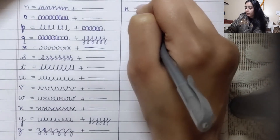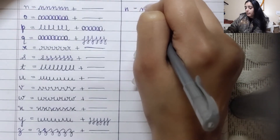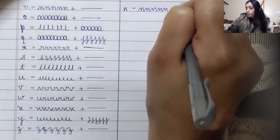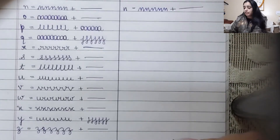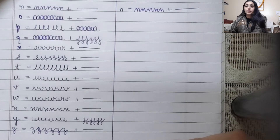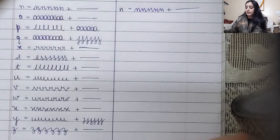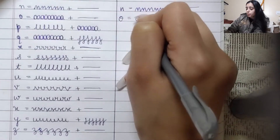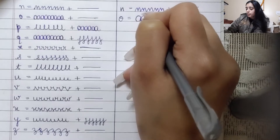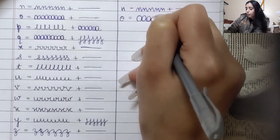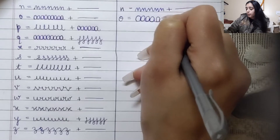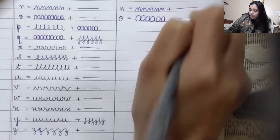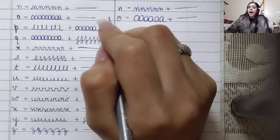Starting with alphabet N — write alphabet N in a continuous form and make sure it goes in a straight line. Coming on to alphabet O — you have to draw joint O's, make sure they are joined and go in a straight line.